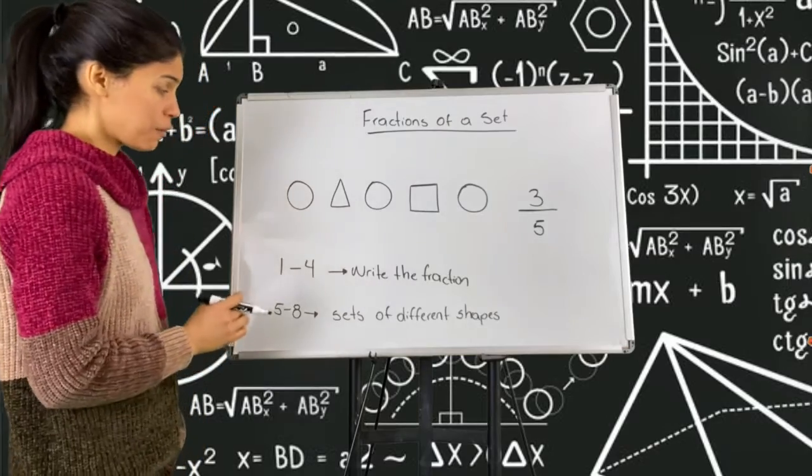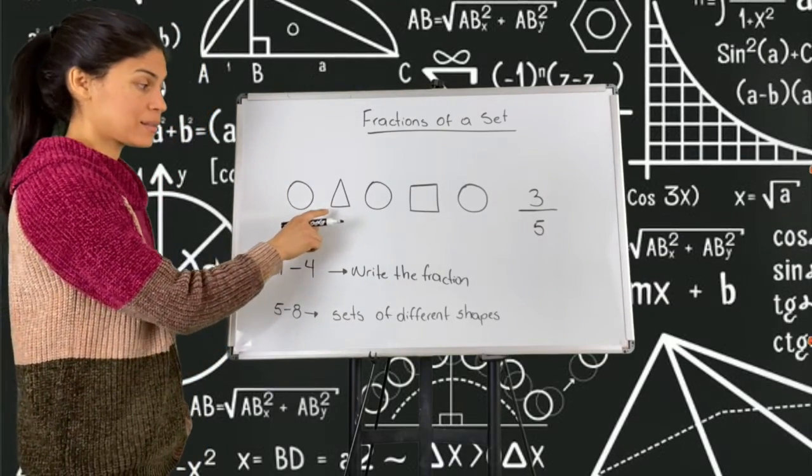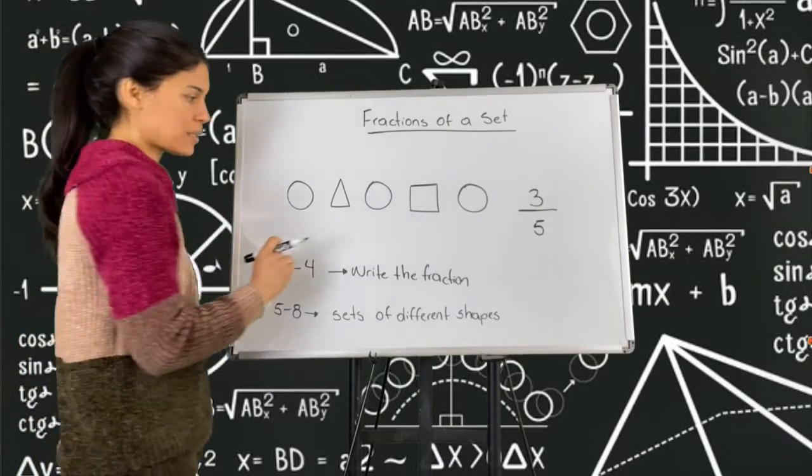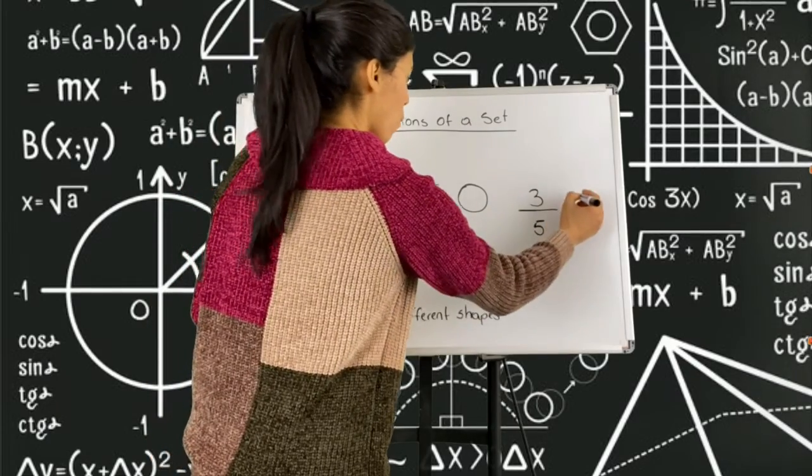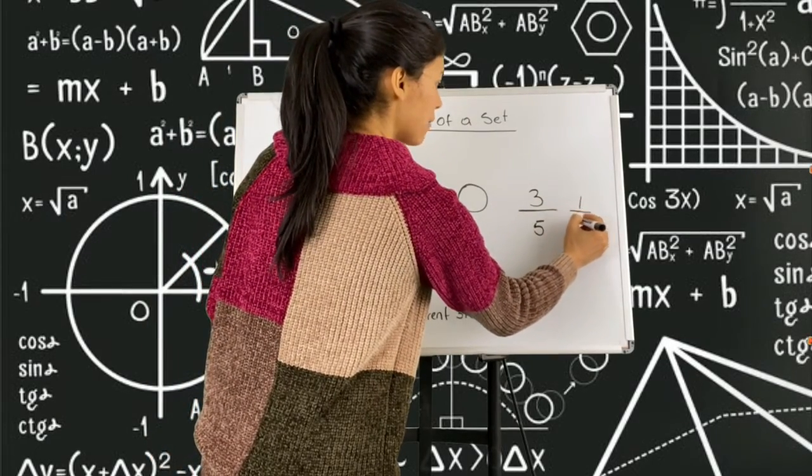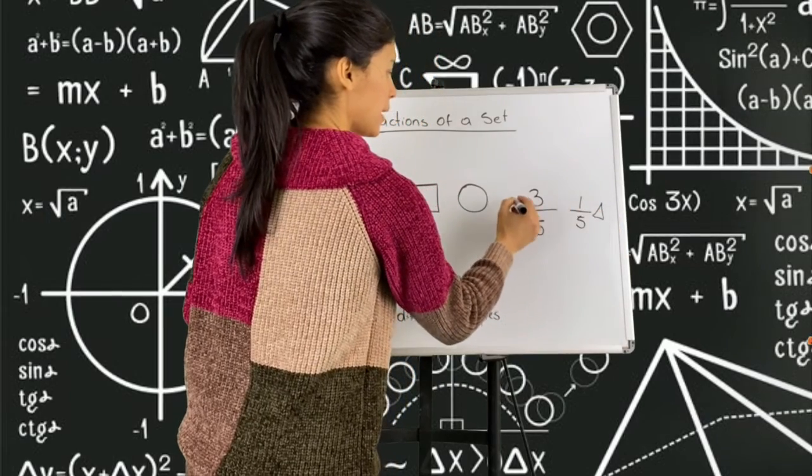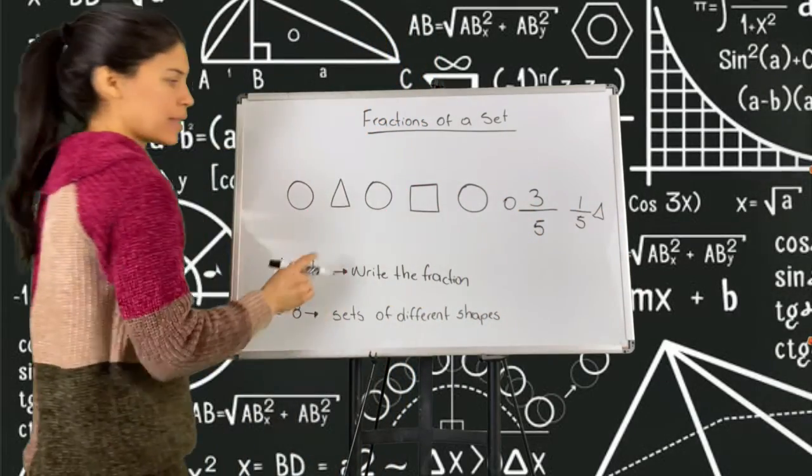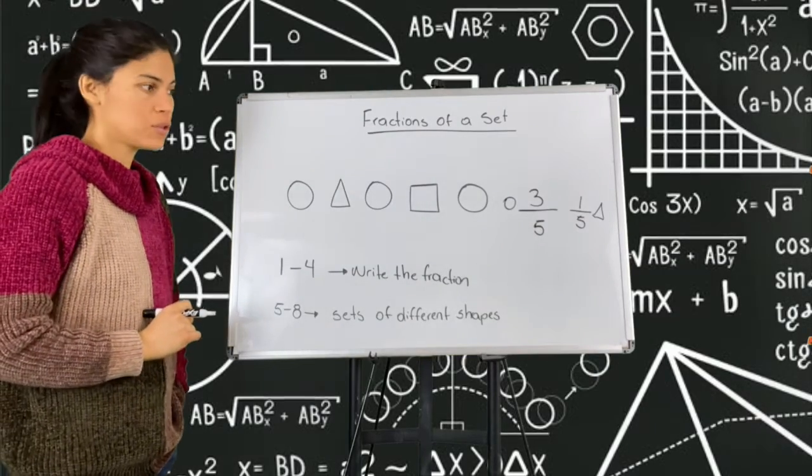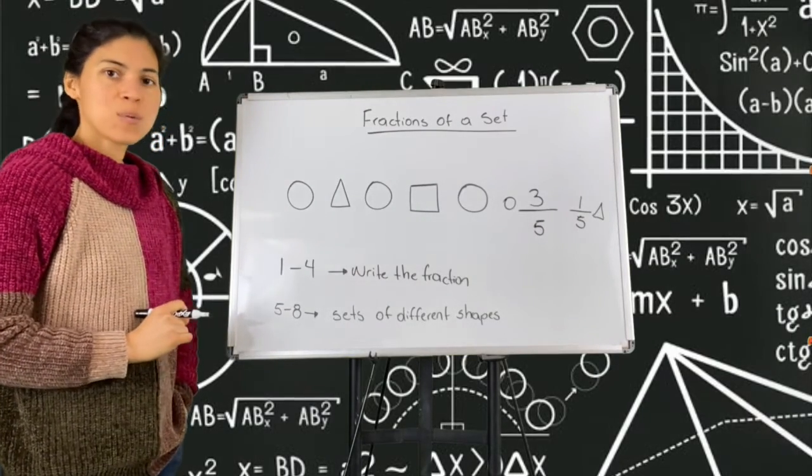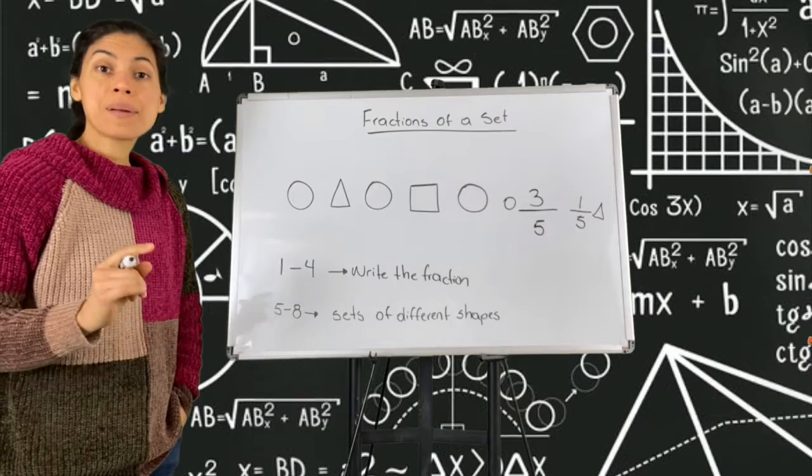If I would like to represent triangles, I will say that there is one out of five are triangles. And one out of five is a square.